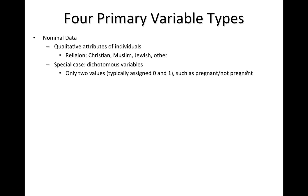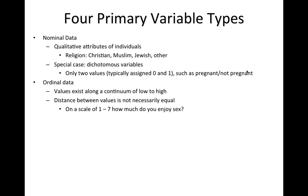Special cases of nominal data are dichotomous variables — nominal variables in which there are only two values, typically assigned one and two, or zero and one. An example would be pregnant or not pregnant: a dichotomous variable in which there can only be those two values.